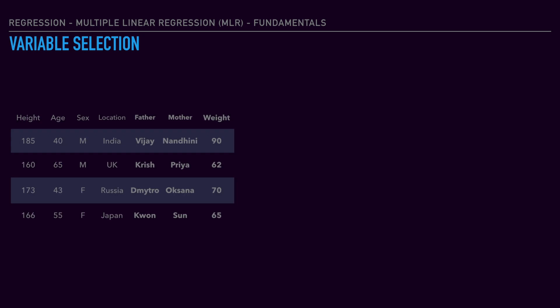Variable selection is very important. Let's consider the MLR dataset with multiple linear regression. Variables like height, age, sex, and location seem to be much correlated with weight as the dependent variable, with linear relationships. But what happens if we include father and mother name data? Does it have any influence on weight? Because it's just a name, it doesn't have any influence on weight. Hence, these are irrelevant data.